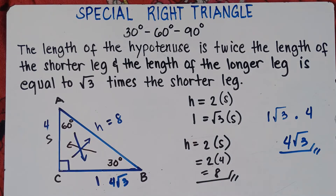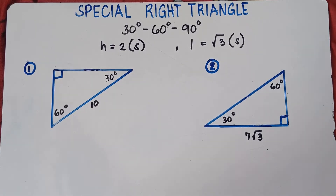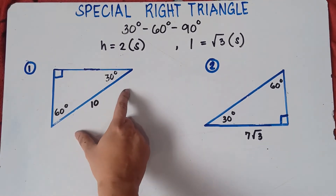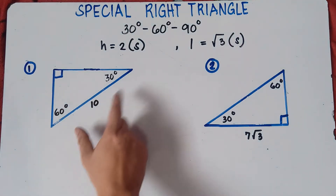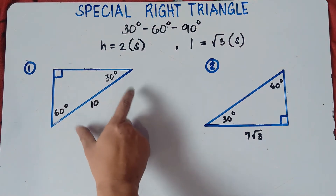Now let's give more examples for you to really understand the special right triangle 30-60-90 degrees. Example number one: we have a given hypotenuse of 10. This is the hypotenuse — it's opposite the 90-degree angle, or the longest side.